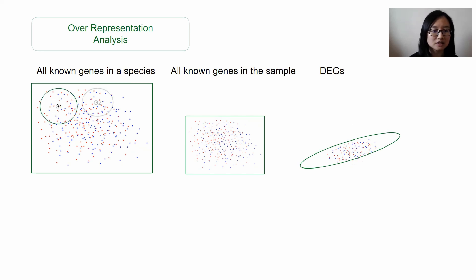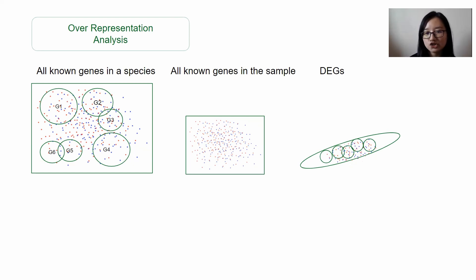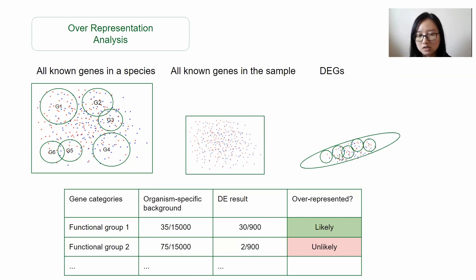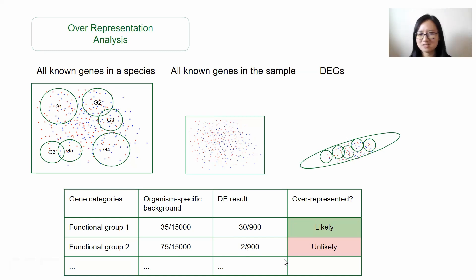For example, we know that certain genes in this species are enriched in functional group 1, group 2, and so on. Then we map this gene set in the DEG and we can get a table like this. In functional group 1, there are 35 genes over all the known genes in species, which is 15,000 genes, and then there are 30 genes in 900 DEGs — so they are over-represented here. Whereas functional group 2 has 75 genes but only 2 genes in DEG, so by ratio it's not really likely that functional group 2 is enriched in this DEG.